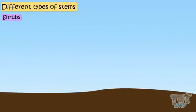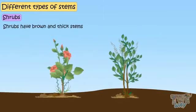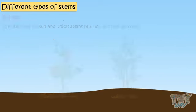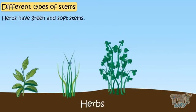Shrubs have brown and thick stems, but not as thick as trees. Herbs have green and soft stems.